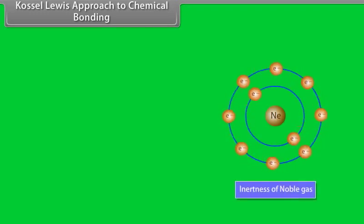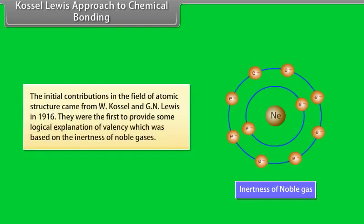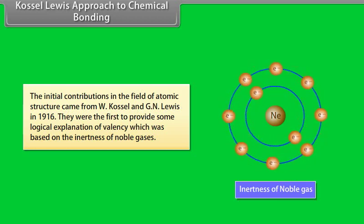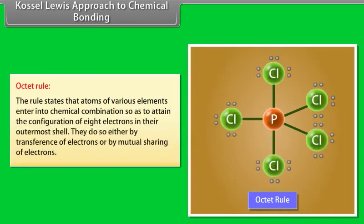Kossel-Lewis approach to chemical bonding: The developments in the field of atomic structure provided foundations for various theories of valency. The initial contributions came from W. Kossel and G. N. Lewis in 1916. They were the first to provide a logical explanation of valency, based on the inertness of noble gases. The octet rule states that atoms of various elements enter into chemical combination so as to attain the configuration of 8 electrons in their outermost shell, either by transference or by mutual sharing of electrons.